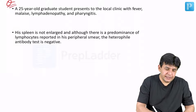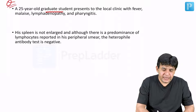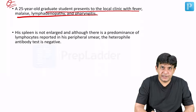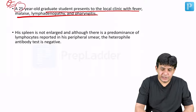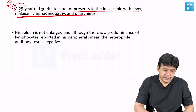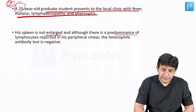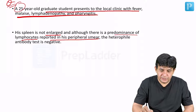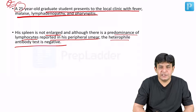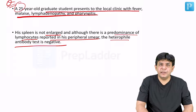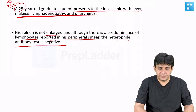Coming to another question: a 25-year-old graduate student presents to the local clinic with fever, malaise, lymphadenopathy, and pharyngitis. Note the young age. The spleen is not enlarged. There is a predominance of lymphocytes reported in the peripheral smear. The heterophil agglutination antibody test is said to be negative.